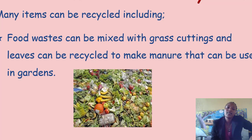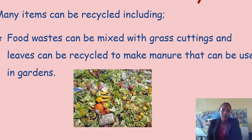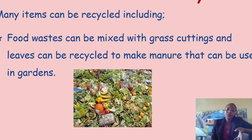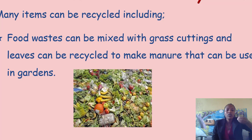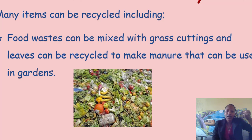We have also food waste. Food waste can be mixed with grass cuttings and leaves, and they can be recycled to make manure that can be used in gardens. The vegetables need manure for them to grow healthy. We get manure from the mixture of food waste, grass cuttings, and leaves to make compost. Compost is a mixture of waste products — food, grass, and leaves — and we put that manure in the gardens.